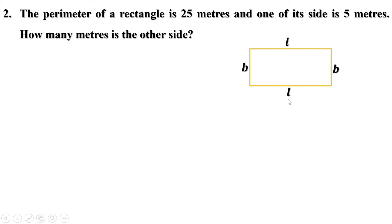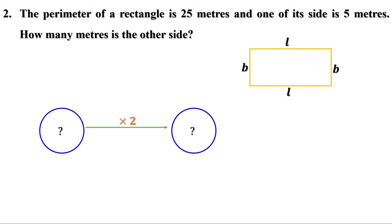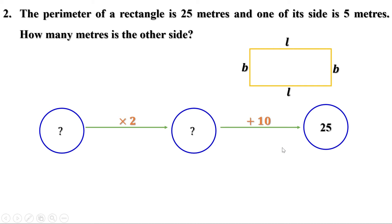We have to find the other side. To find the perimeter, first multiply this side by 2, then add 10 (which is 2 times the known side of 5), giving a perimeter of 25. To get the unknown side, come back: subtract 10 from 25 to get 15. That means 2 times one side is 15. Dividing by 2 gives 7.5 meters.